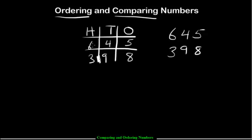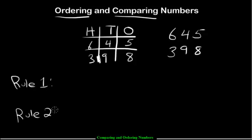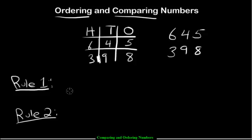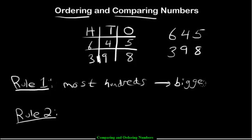Now to figure out which number is bigger and which number is smaller, you have to understand two rules. Rule number one states that in any three-digit number, the number with the most hundreds is the bigger number.